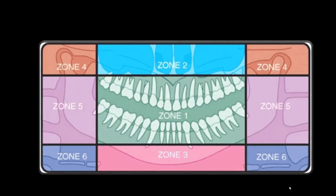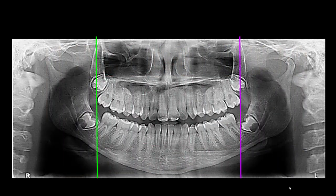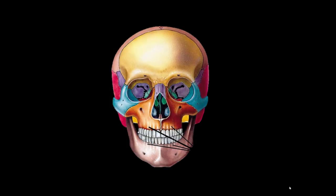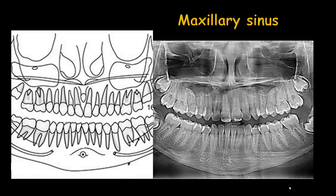If you missed that video, go to the playlist of panoramic and take a peek. Today we're going to talk about zones 1, 2, and 3. These three zones are in the middle — it's like looking at the skull from the front view. Let's start our anatomical landmarks in the front zone from the maxillary sinus.